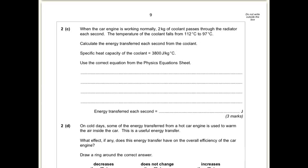Part C. When the engine is working normally, 2 kg of coolant passes through the radiator each second. The temperature of the coolant falls from 112 to 97 degrees C. Calculate the energy transferred. You've got a specific heat capacity there, and again, it says use the correct equation from the physics equation sheet. So that equation is going to be E for energy equals the mass times C, which is the specific heat capacity, times theta, which is the change in temperature. So the mass is 2 kg.